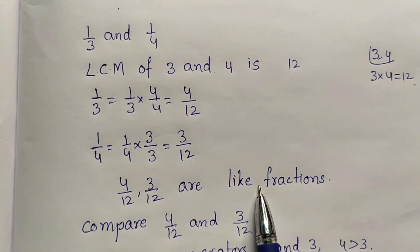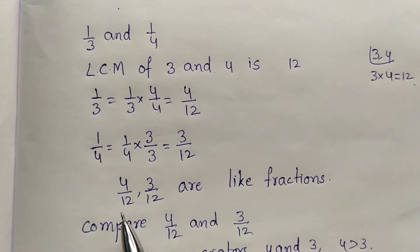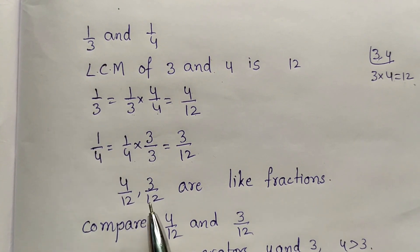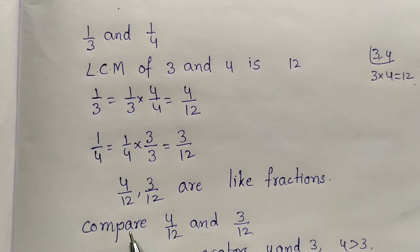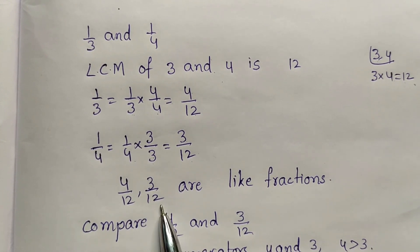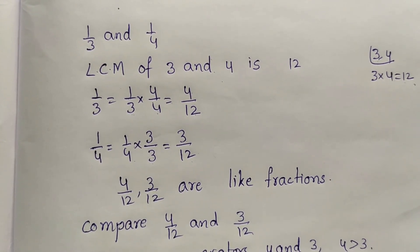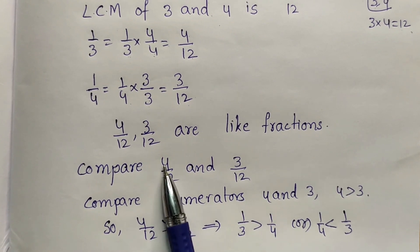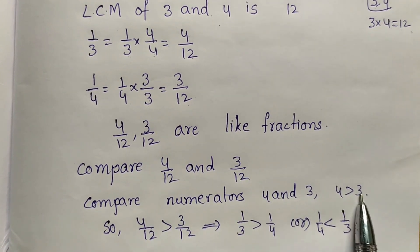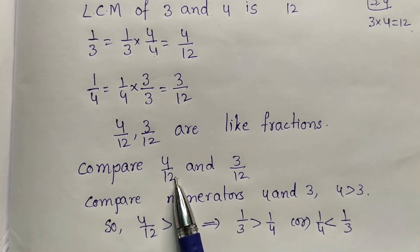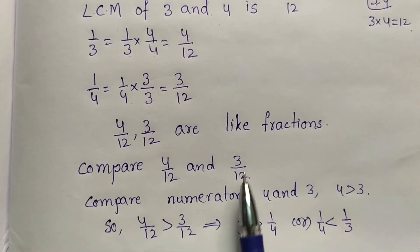Now 4 by 12 and 3 by 12 are like fractions. Now we can compare easily. The greater numerator is the greater fraction and the smaller numerator means that fraction is the smaller fraction. Here we have 4 by 12 and 3 by 12. Compare the numerators 4 and 3 — 4 is greater than 3, so that fraction 4 by 12 is greater than 3 by 12.